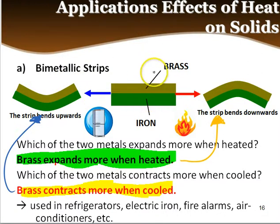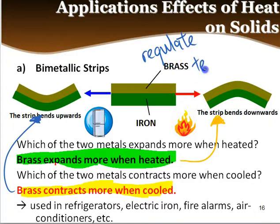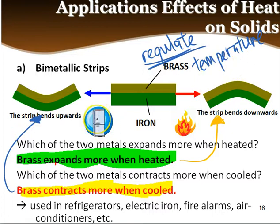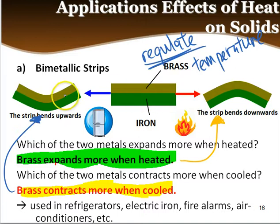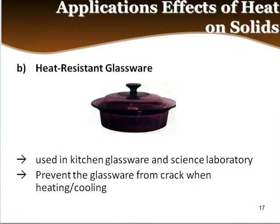The bimetallic strip is used in refrigerators, electric irons, fire alarms, and air conditioners to regulate temperature. For example, in an air conditioner set to 24°C, the bimetallic strip helps control the temperature — switching off when too cold and switching on when too hot — because of the way the bimetallic strip bends.